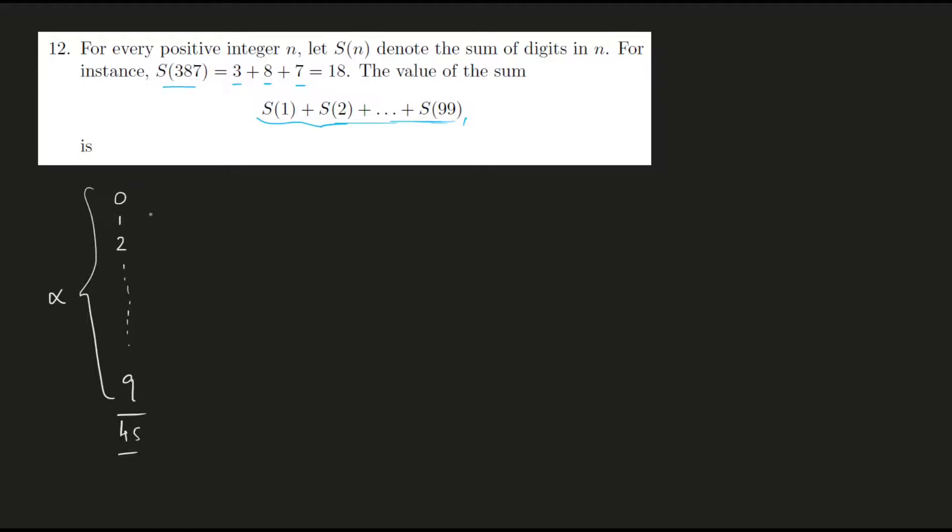So it's the sum of numbers from 0 to 9, I'm calling it alpha and it's obviously equal to 45. What is S of 10? As per the definition, S of 10 is nothing but 1 plus 0.